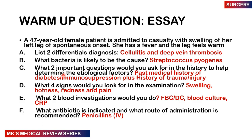Coming back to the warm-up question: for a 47-year-old female with a swollen, warm, feverish left leg, the two differentials are cellulitis and DVT. The bacteria most likely responsible is Streptococcus pyogenes. Important history questions include past medical history of diabetes or immunosuppression, and history of trauma or injury. Four examination signs are swelling, hotness, redness, and pain. Two blood investigations are a full blood count and blood cultures, with CRP optional. The antibiotic of choice is penicillin, given as an IV formulation.